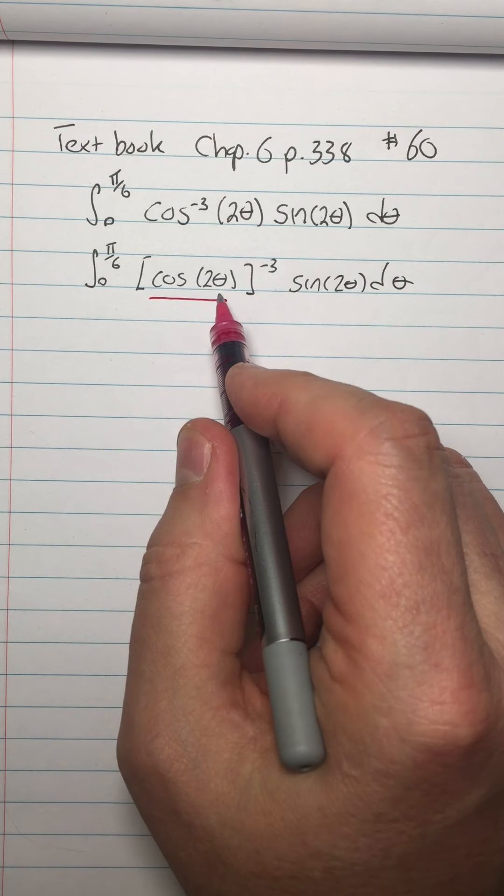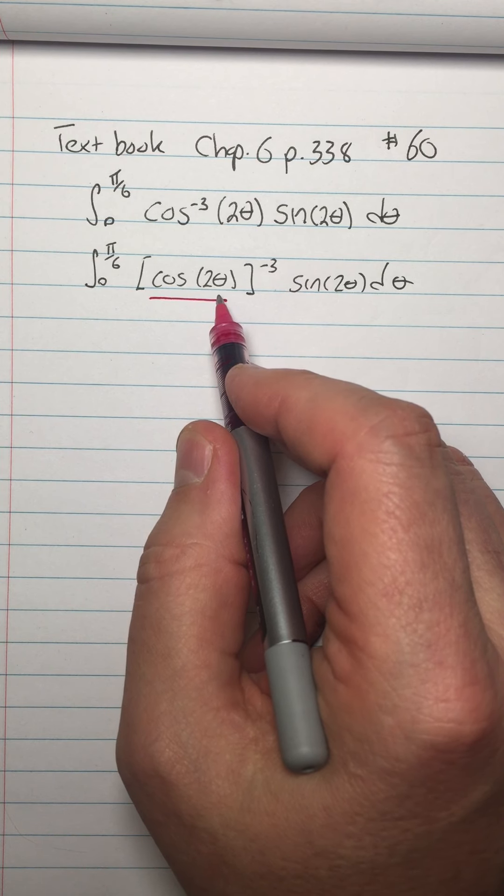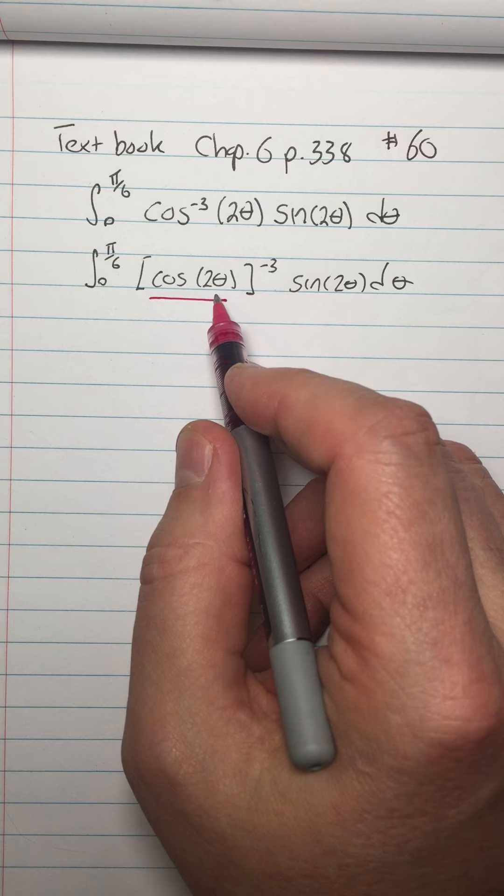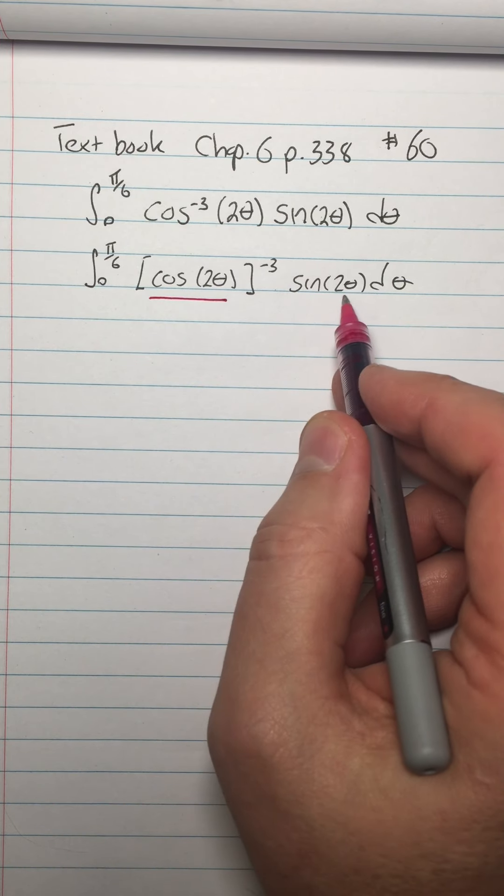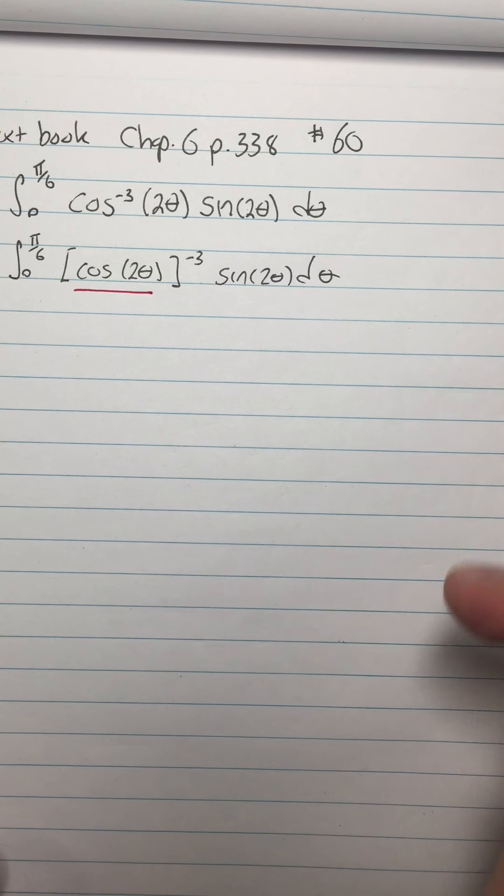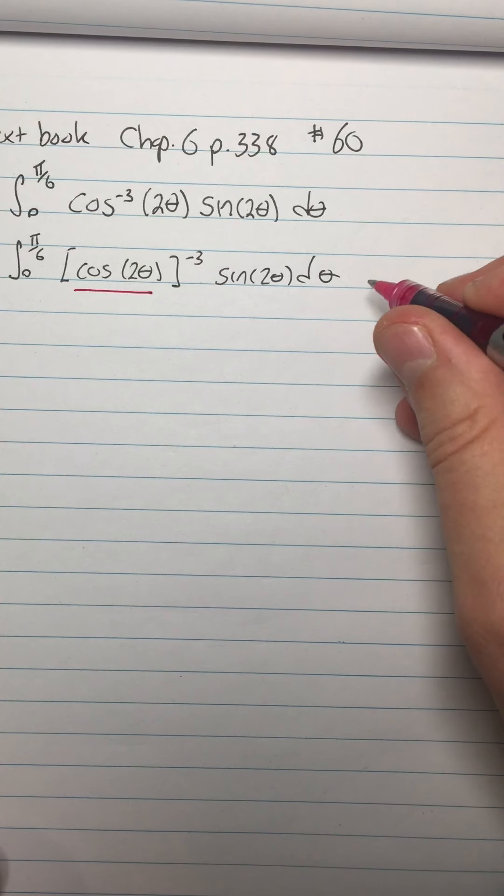Now don't be bothered by the fact that there's an inside function inside the inside function, because when I do the derivative of cosine 2 theta, I'm going to get negative 2 sine of 2 theta, and that sine of 2 theta is just right there. So I can just use cosine of 2 theta as my u.